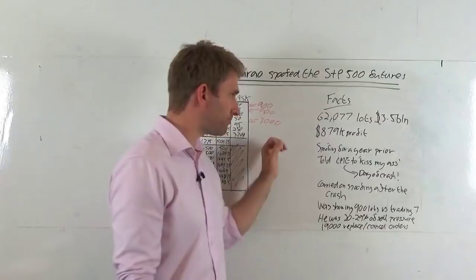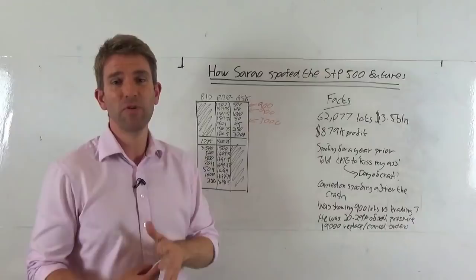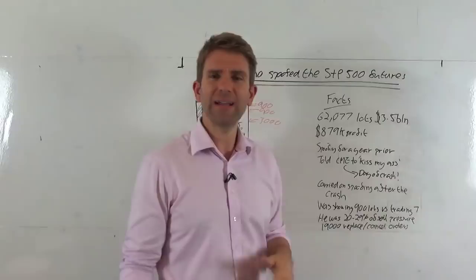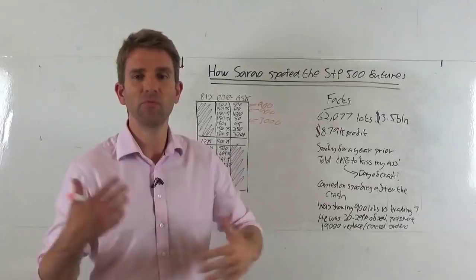So during the flash crash, Sarao traded 62,077 lots of a notional value of 3.5 billion. He made $879k in profit. Like I said, he'd been spoofing for a year prior and allegedly the CME rang him, or he rang them on the day of the flash crash. They wrote to him and asked him what he was playing at, what he was doing.